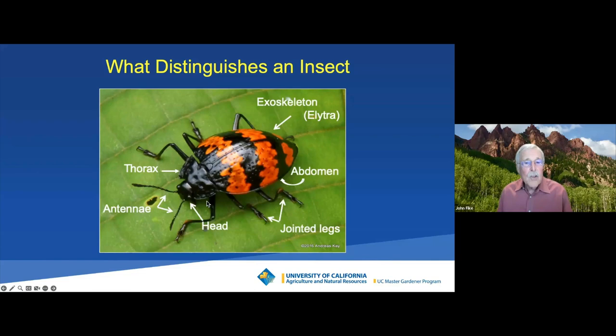So the insect has a head, a thorax where the legs come out, and an abdomen. It has three pairs of legs — six legs. Tonight, I'm only talking about the six-legged creatures. I'm not going to talk about roly-polies, mites, ticks, or spiders — just the insects.